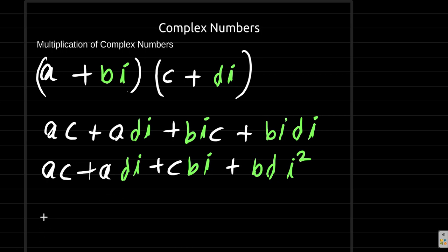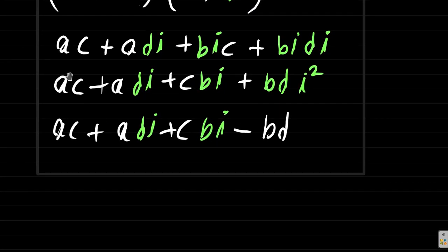So what we're going to have is ac plus adi plus cbi plus, well, minus bd. So bd no longer has an i associated with it. So we have ac minus bd, that's going to be the real part of the product.